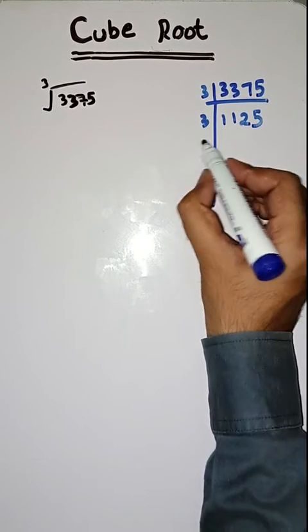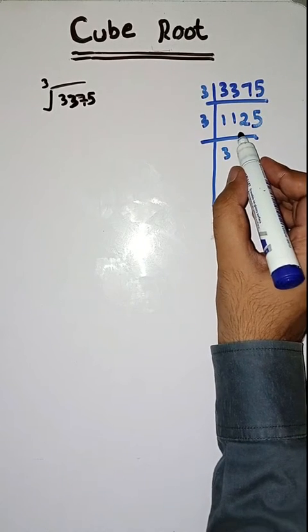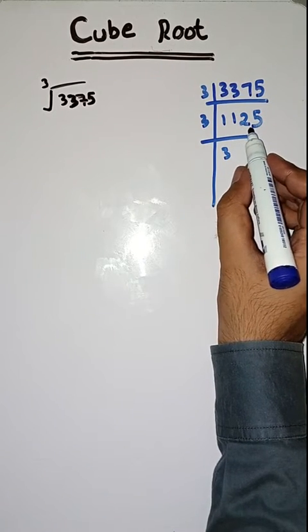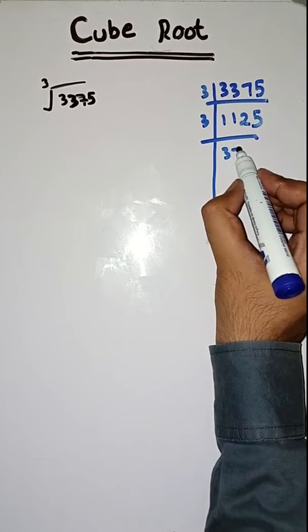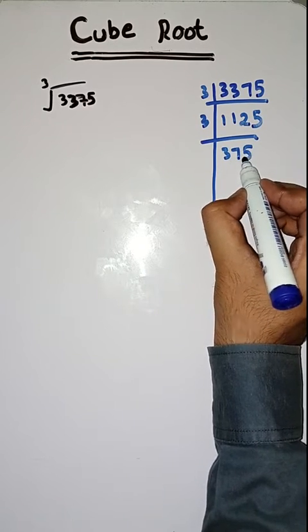Again with 3. 3 times 3 is 9. And 22 — 3 times 7 is 21. 15 — 3 times 5 is 15.